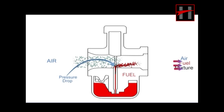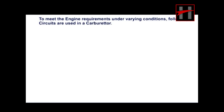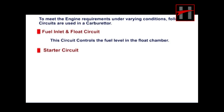To meet engine requirements under varying conditions, the following circuits are used in a carburetor. The fuel inlet and float circuit controls the fuel level in the float chamber. The fuel filter starter circuit helps in starting the cold engine.